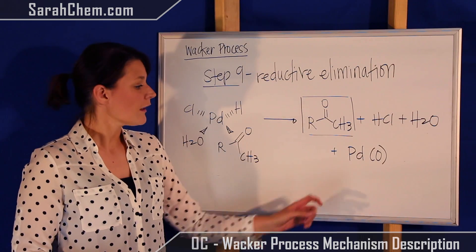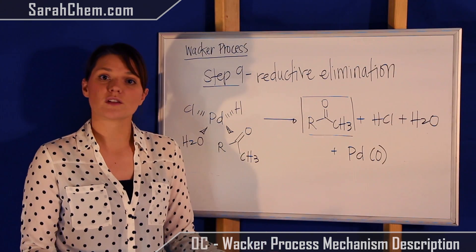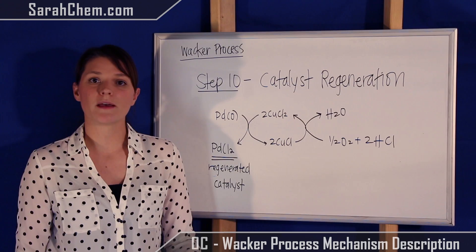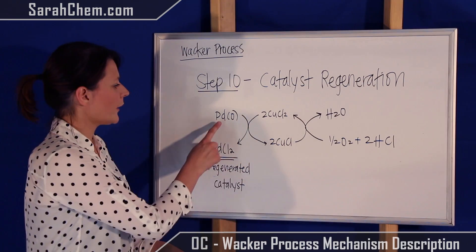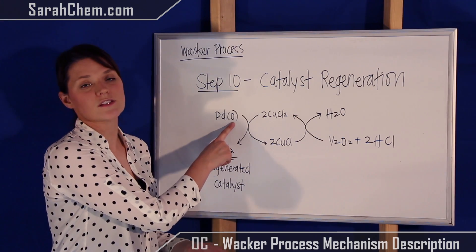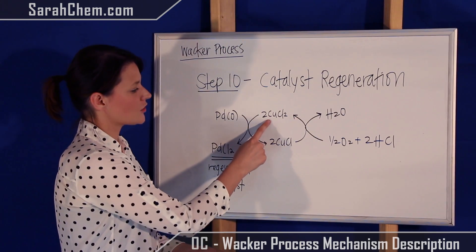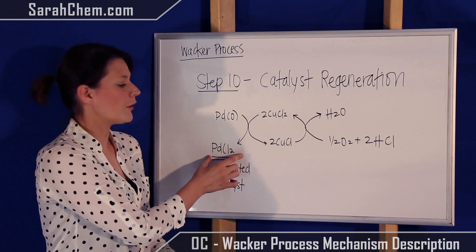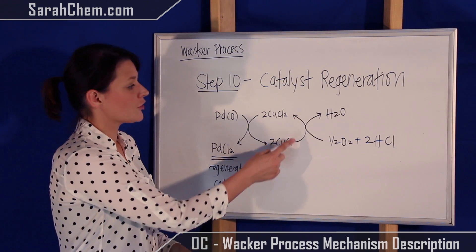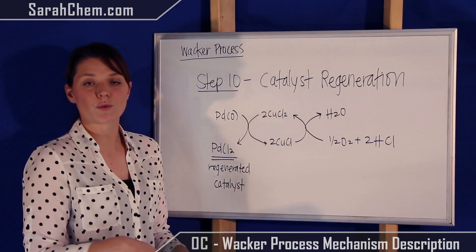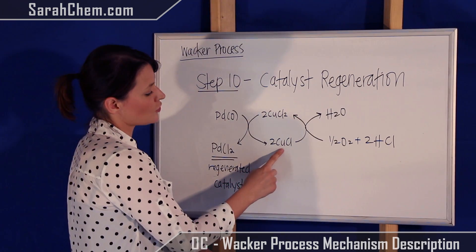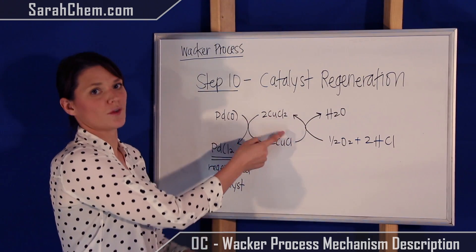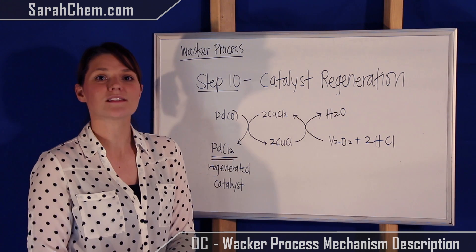Step ten is all about regenerating the catalyst. The palladium with oxidation state zero from step nine reacts with two units of CuCl₂, producing PdCl₂ and CuCl as products. We need to keep regenerating CuCl₂ to allow the reaction to continue. CuCl then reacts with oxygen and hydrochloric acid to produce water and the regenerated CuCl₂ catalyst — and that's everything that happens in this process.